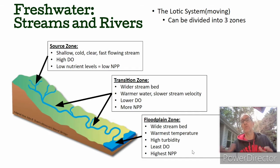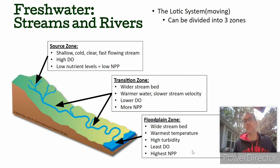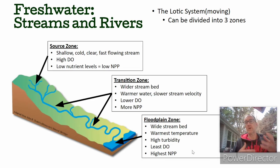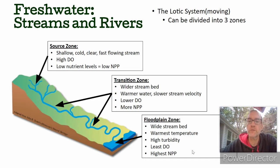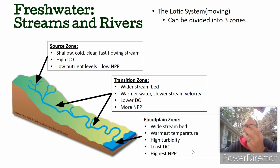Lastly, in some watersheds, we find the floodplain zone, where the stream really widens — think of the Mississippi. It has warm temperatures and high turbidity, which has to do with the amount of sediment in the water. It has the least amount of dissolved oxygen because of all the organic matter breaking down there, and the velocity is also reduced.